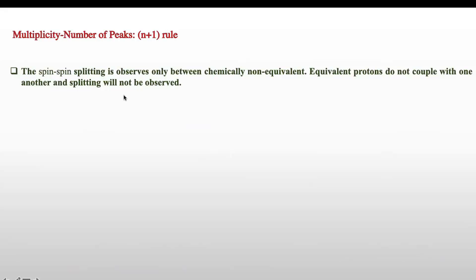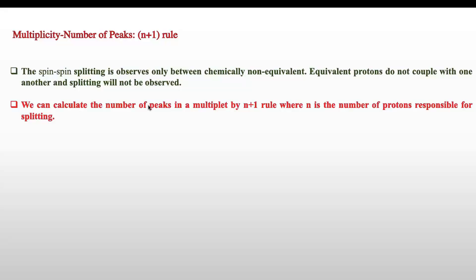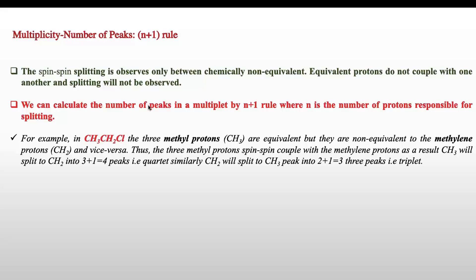Spin-spin splitting is observed only between chemically non-equivalent protons; equivalent protons do not couple with each other and splitting will not be observed. We can calculate the number of peaks in a multiplet by the N+1 rule, where N is the number of protons responsible for splitting. In chloroethane, the three methyl protons are equivalent but non-equivalent to the CH₂ protons. The CH₂ protons will split the CH₃ peak into a triplet, and the CH₃ protons will split the CH₂ peak into a quartet, according to the N+1 rule.